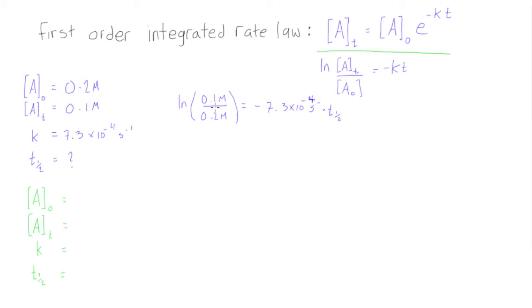So first of all, 0.1 divided by 0.2, we know this is just going to be equal to 0.5, so we're going to take the ln of 0.5, type it in your calculator and you're going to get negative 0.69, that's just the ln of 0.5.